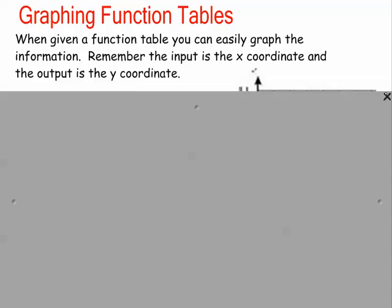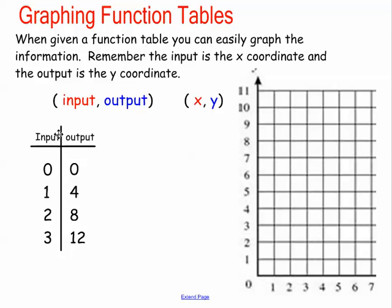It's going to be very easy to move to graphing. I kind of removed that third, middle column, so now these are just my x and y values. This is my x, this is my y. This is my x-axis, this is my y-axis. So 0, 0 would just be here. 1, 4 — over 1, up to 4. 2, 8 — over 2, up to 8. And 3, 12 — over 3, up to 12. So 12 would be there. That is my graph.